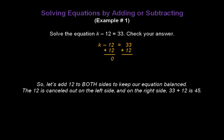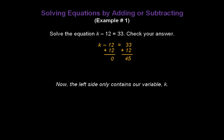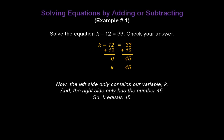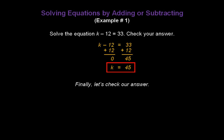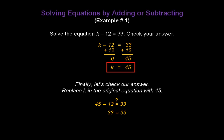On the right side, 33 plus 12 is 45, so we'll write that down. The left side only contains our variable k, and the right side only has the number 45. So our answer is k equals 45. To check our answer, replace k in the original equation with 45: 45 minus 12. Does that equal 33? And sure enough, 45 minus 12 is 33 — both sides equal each other, so we know our answer is correct.